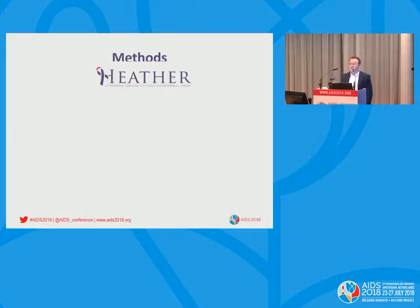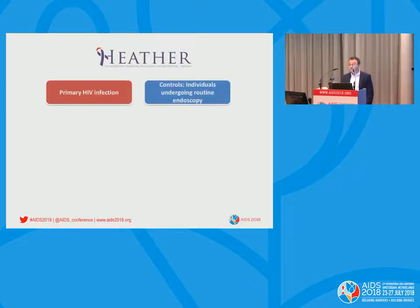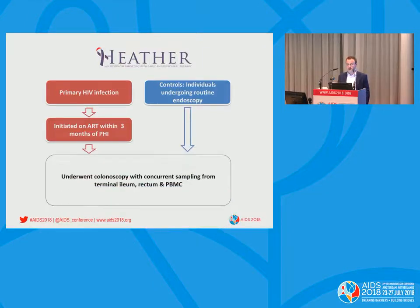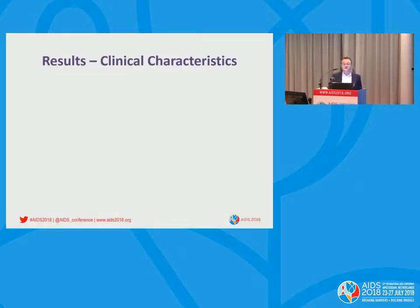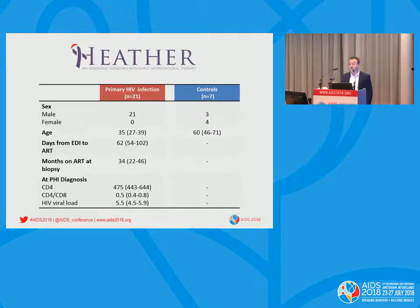To do that, we used the HEATHER study, an observational study of treated primary HIV infection. We also recruited controls — individuals undergoing routine endoscopy. The primary infection cohort initiated antiretrovirals within three months of their diagnosis of primary HIV infection. Both groups underwent colonoscopy with concurrent sampling from the terminal ileum, rectum, and peripheral blood. There were 21 individuals in the primary infection cohort, all male. In contrast, the majority of controls were female, with median age 60 compared to 35 in the primary infection cohort.